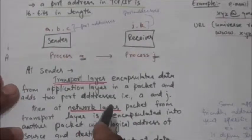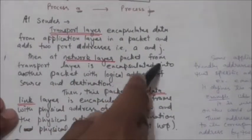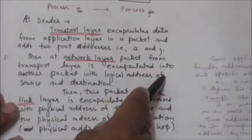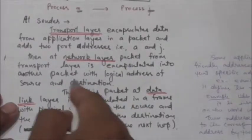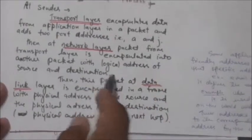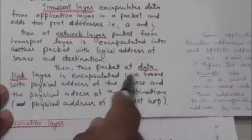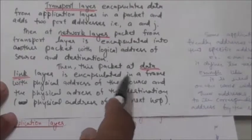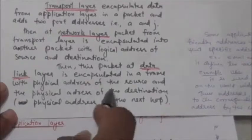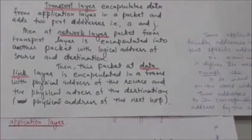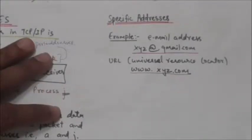At the network layer, the packet received from the transport layer is encapsulated into another packet with the logical addresses of source and destination, as we studied in the previous tutorial. Then at the data link layer, this packet is encapsulated in a frame with the physical address of the source and destination — where the destination physical address is the physical address of the next hop.